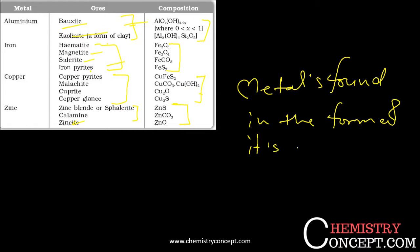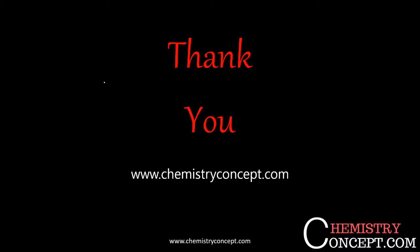So to summarize: the ore for iron includes hematite and magnetite; for aluminium, bauxite; for copper and zinc, we get several types of ores. If you have any doubts, you can comment. Thank you.